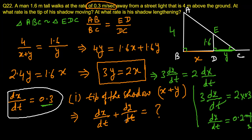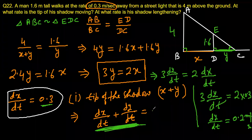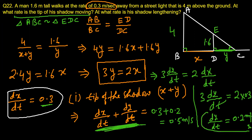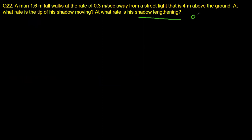Now dx/dt is 0.3 and dy/dt is 0.2, so d(x + y)/dt = 0.3 + 0.2 = 0.5 meters per second. The tip of the shadow is moving at 0.5 meters per second, and the shadow is lengthening at the rate of 0.2 meters per second.